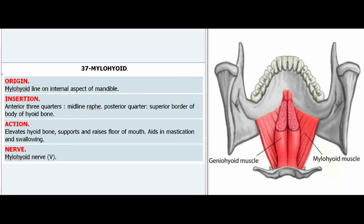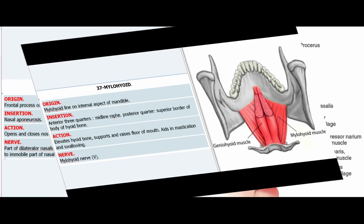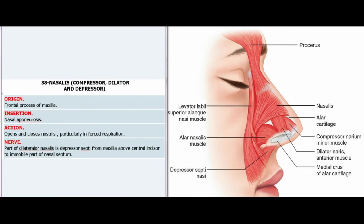37. Mylohyoid. Origin: Mylohyoid line on internal aspect of mandible. Insertion — Anterior three-quarters: midline raphe; Posterior quarter: superior border of body of hyoid bone. Action: Elevates hyoid bone, supports and raises floor of mouth, aids in mastication and swallowing. Nerve: Mylohyoid nerve (V).